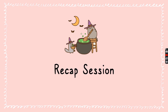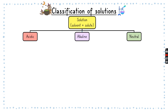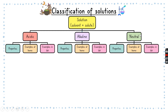Let's do a recap session of what we've learned before. So how do we classify solutions? Remember that a solution means that you have a solute dissolved in a solvent, and it can either be classified as acidic, alkaline, or neutral. All of these have their own different properties, and we need to know what those are — what are the examples we can find at home, and what are the examples we can find in the lab.